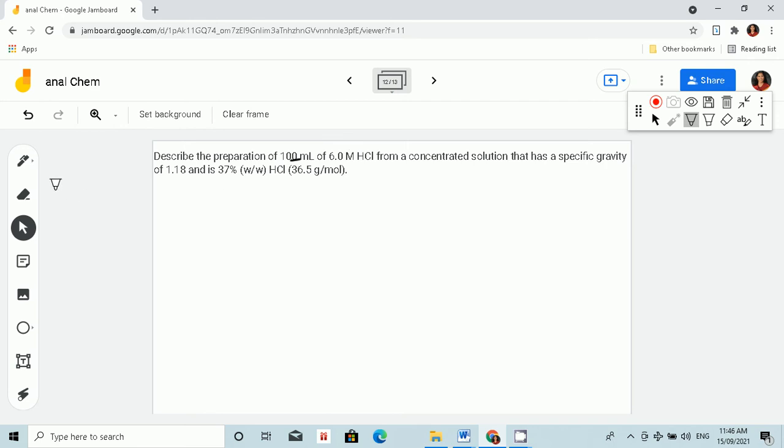We are asked how to prepare 100 ml solution which has 6 molar HCl. If we have our container, 100 ml, this has 6 molar HCl. How did you prepare that one in the laboratory? We are given 1.18 and 37%.